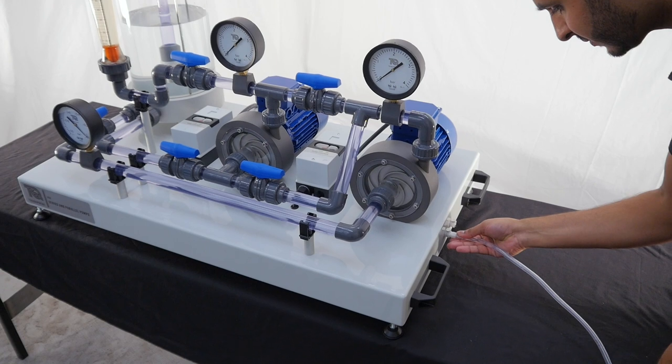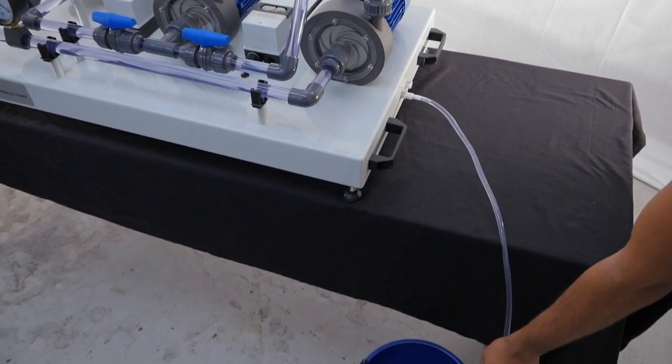The reservoir and pumps can be emptied using the couplings located on the side of the unit, using the drainage pipe provided.